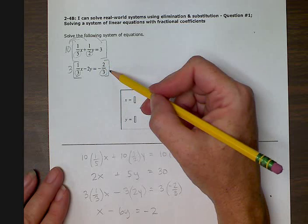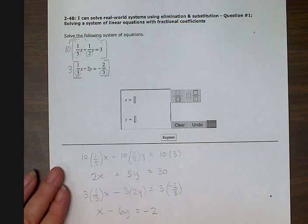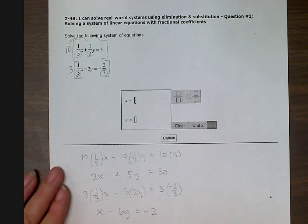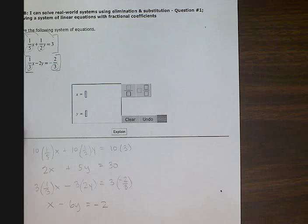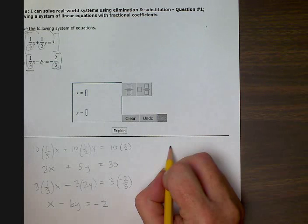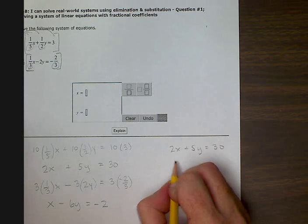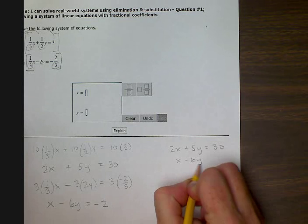We got rid of the fractions first. So now we can solve that system of equations. So I'm going to move over here to the side and rewrite it. Two x plus five y equals thirty, and x minus six y equals negative two.